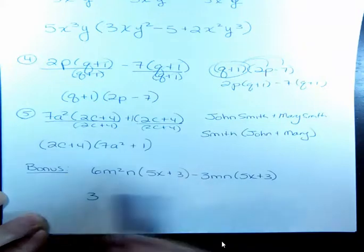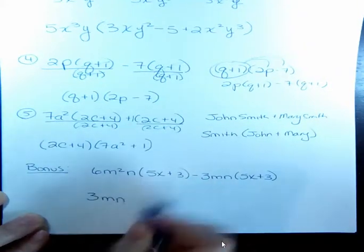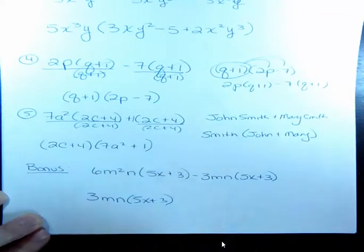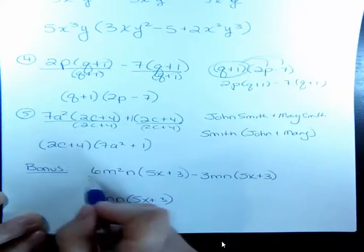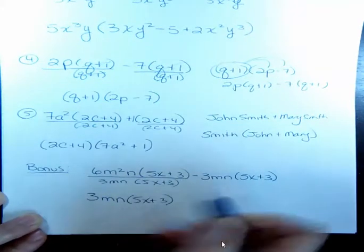For the m's, we have an m that we can take out, and we can take out the n. And we can take out the 5x plus 3. So there's a lot of different things that they have in common. If I take out 3mn, 5x plus 3 out of each one.